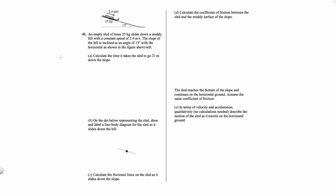Question 41: an empty sled of mass 25 kilograms slides down a muddy hill with a constant speed of 2.4 meters per second. The slope of the hill is inclined at an angle of 15 degrees with the horizontal as shown in the figure. For part A, we're calculating the time it takes the sled to go down 21 meters. So our displacement delta x equals 21 meters, and velocity is 2.4 meters per second.